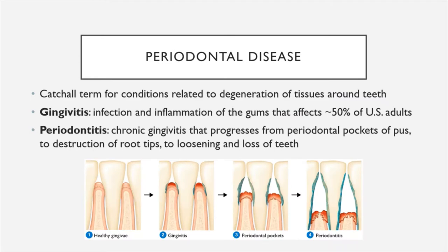Whereas dental caries is the destruction and decay of the tooth itself, periodontal disease is a catch-all term for conditions related to the degeneration of the tissues and support structures around the teeth. Gingivitis is the infection and inflammation of the gums that affects approximately 50% of U.S. adults and is considered a mild form of periodontal disease. Gingivitis can progress if chronic to periodontitis, associated with pockets of pus, destruction of root tips, and eventually loss of teeth altogether.